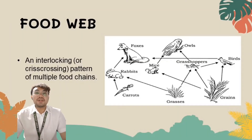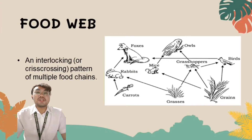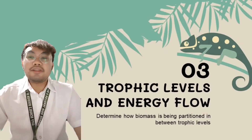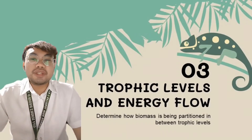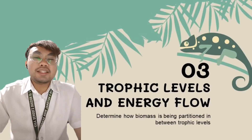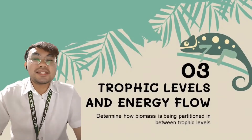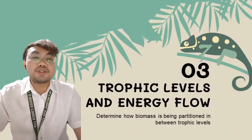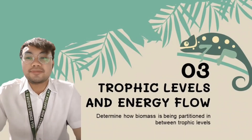In an ecosystem, you can create a lot of food chains. An interlocking or crisscrossing pattern of multiple food chains is what we call the food web. Now that you're already familiar with food chains and food webs, let's move on to the last part of our discussion, which is all about the trophic level and energy flow.